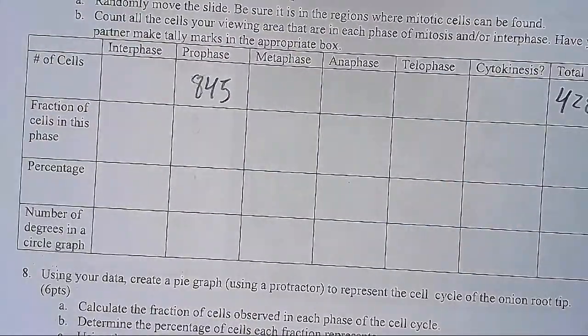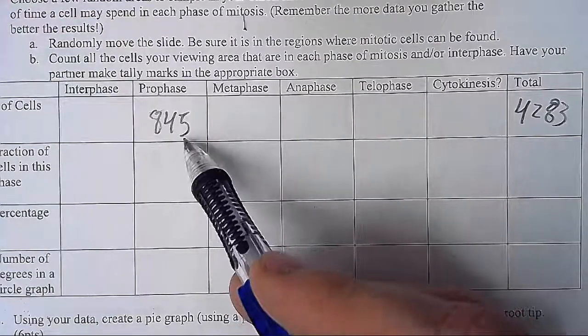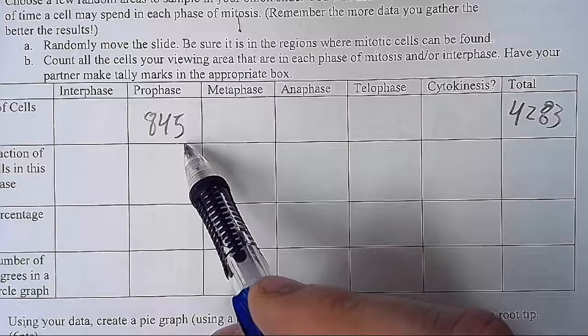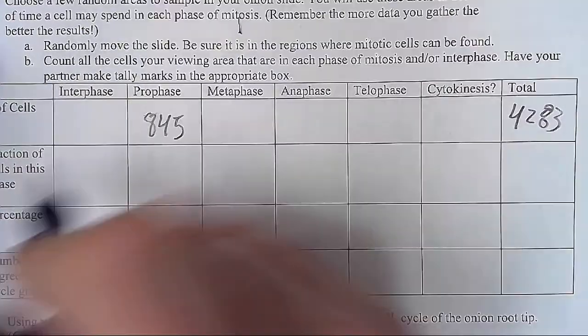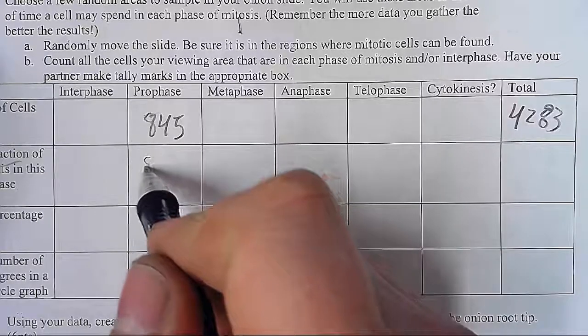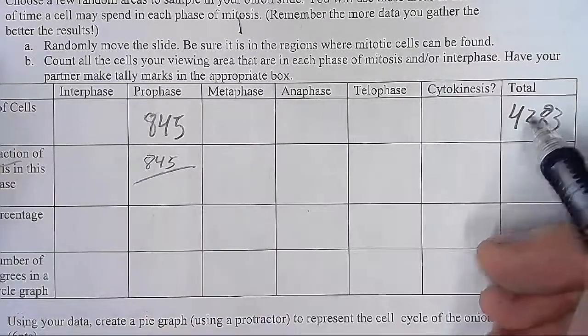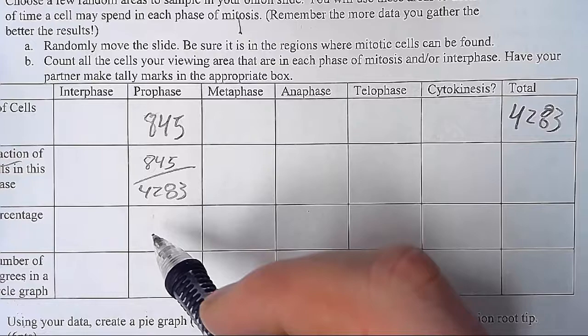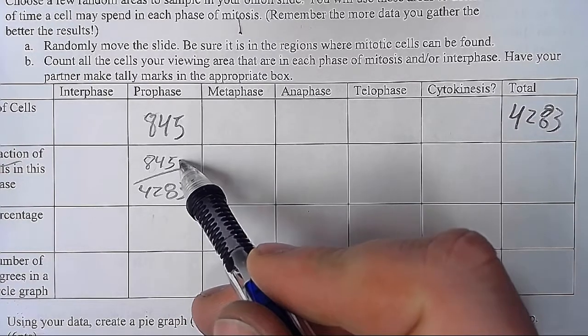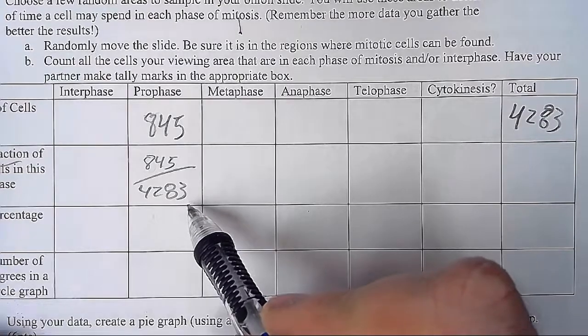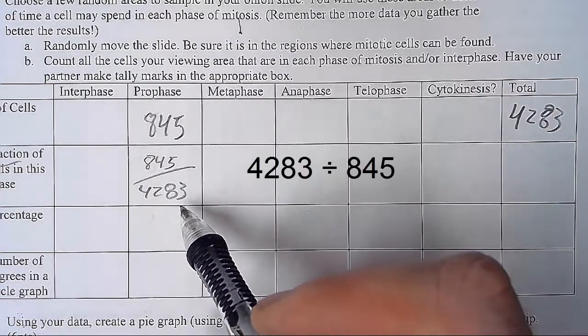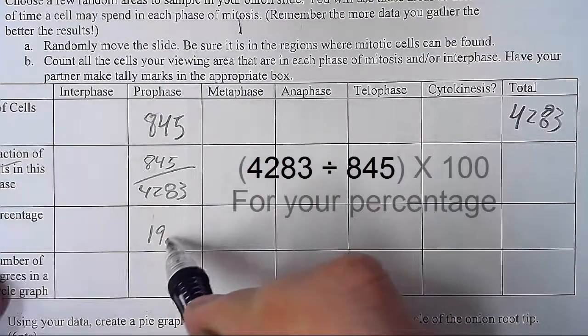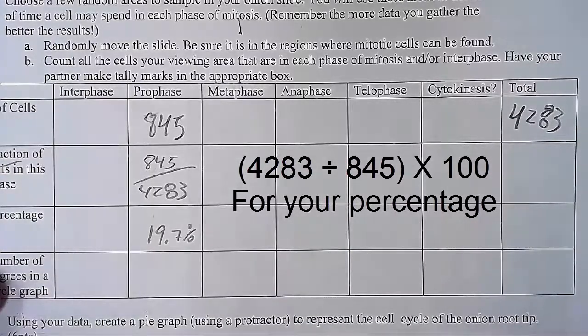So let's go ahead and get started, shall we? We're using my data, that out of 4,283 cells, let's just say 845 of them were found to be in prophase. So your fraction is real easy, right? You got 845 out of your 4,283. Then you just have to calculate your percentage. You do the math, 845 divided by 4,283, and that gives us roughly 19.7%, or 19% would work.